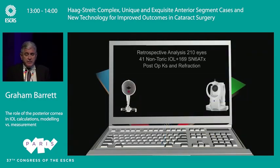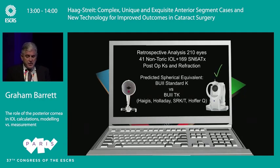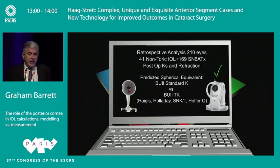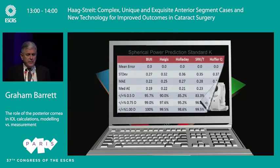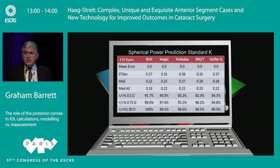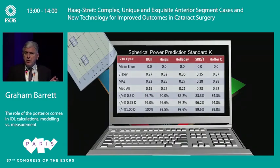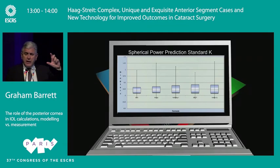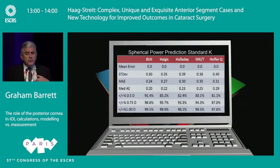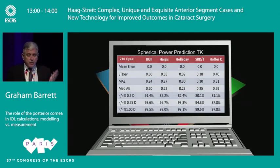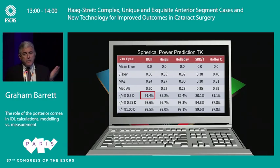This is a series of patients looking at spherical outcomes, comparing the Barrett Universal 2 with standard K versus the Universal 2 with TK (measured posterior cornea). With standard K, you can see 95% within a half diopter with modern formulae — excellent prediction. The box plot shows the first and third quartile and the outliers; the more compact, the better. Using TK, it still does well at 91.4%, better than other formulae, but not better than the standard K result.